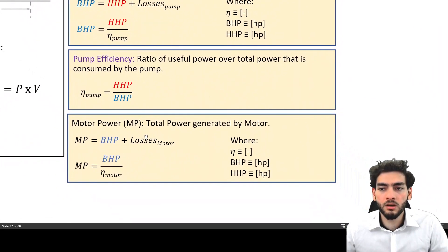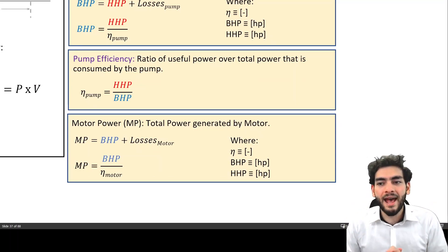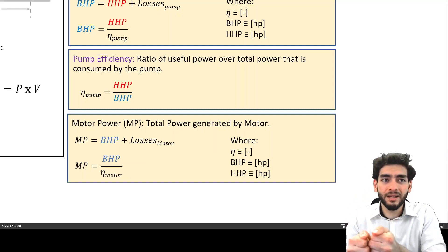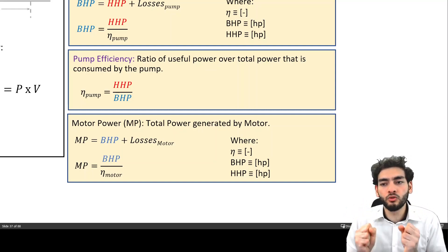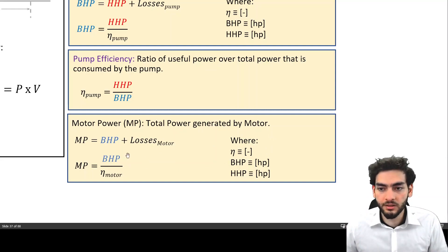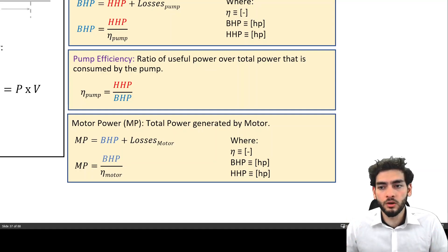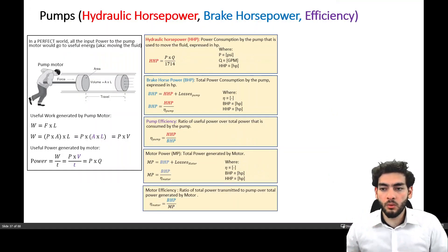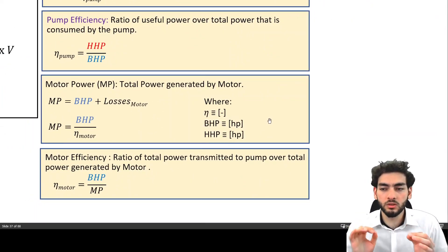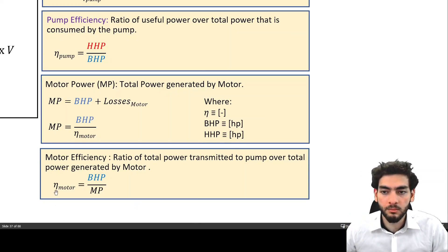The other power to be aware of is motor power, which is the total power generated by the motor. It includes the brake horsepower — all the power supplied to the pump — plus the inherent losses within the motor itself. There is another equation to express motor power if you know the motor efficiency. Motor efficiency is the ratio of the total power transmitted to the pump over the total power generated by the motor.